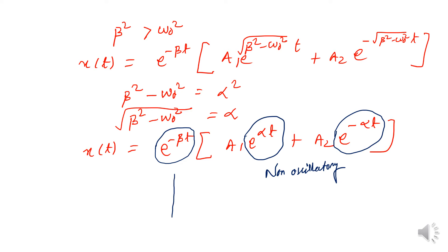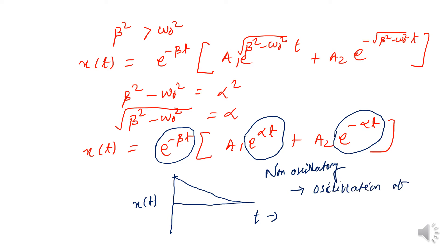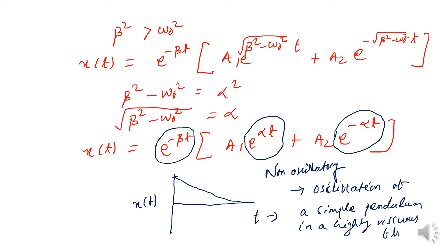Depending on the values of α, β, A₁, and A₂, you will get multiple natures of the displacement-time graph. One such graph shows a decaying curve with a larger slope — a non-oscillatory function. A real-life example of over-damping is the oscillation of a simple pendulum in a highly viscous liquid, where the damping coefficient is much greater than the natural angular frequency of the oscillator.